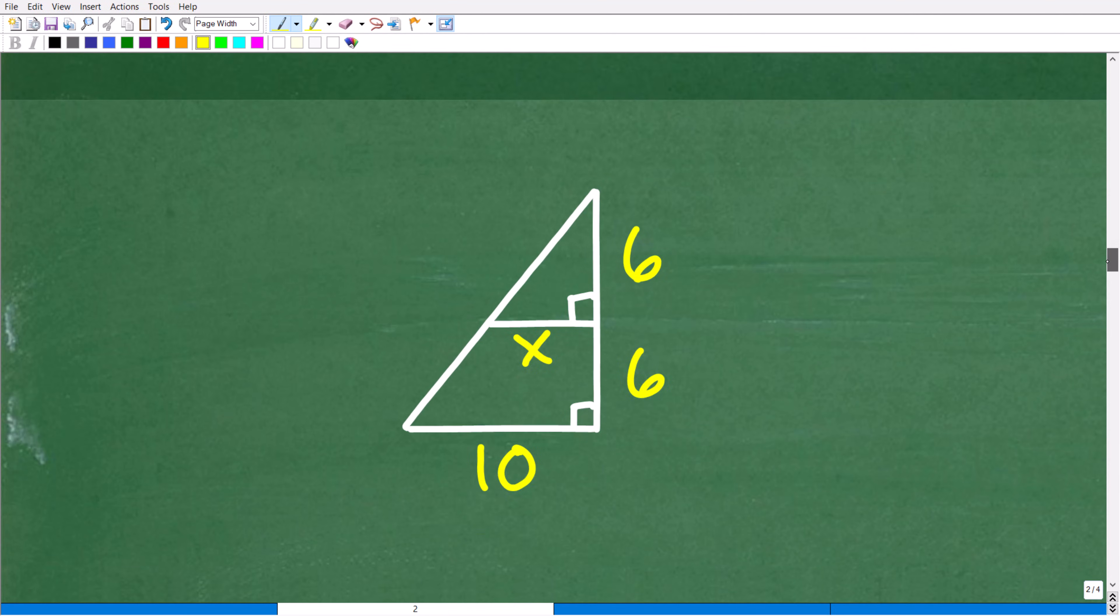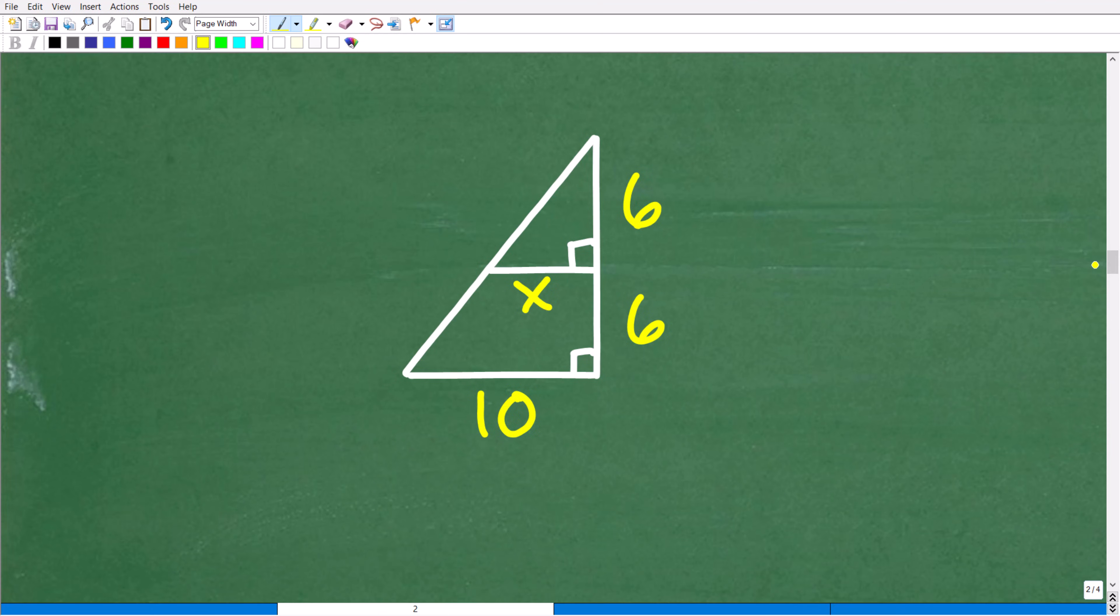All right. So here is our problem. So the first thing we need to understand is that we're dealing with similar triangles. We're dealing with similar figures. So as I indicated, we have a triangle here and we have a triangle here. But what makes two triangles similar? Well, there's different theorems that we can use. But effectively, remember,